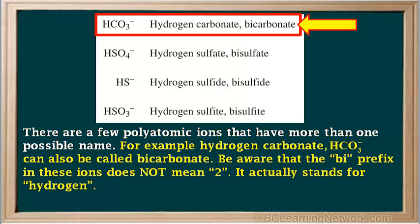For example, hydrogen carbonate, HCO3-, can also be called bicarbonate. Be aware that the "bi" prefix in these ions does not mean 2. It actually stands for hydrogen. Chemistry can be confusing at times.